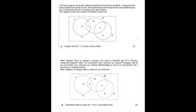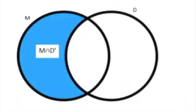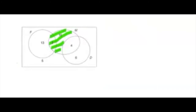Question 2 is about Venn Diagrams. Looking at part A, it says explain what M-intersection D-dash means in this context. M-intersection D-dash is the shaded moon-shaped region shown. But the question asks to explain what is meant in context — this is the students who study mathematics and not drama. Note this is not the number of students, and it is not a probability.